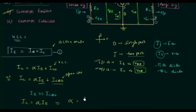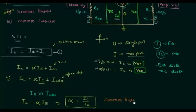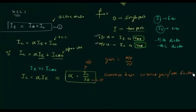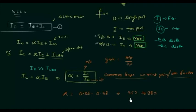So we can say alpha equals IC divided by IE. Alpha is the common base current gain, also called the amplification factor. Gain equals output divided by input, and here IC is the output current and IE is the input current. Alpha has a value between 0.95 and 0.98, which implies that 95% to 98% of the emitter current becomes the collector current. This also implies there is 2% to 5% recombination occurring in the base.